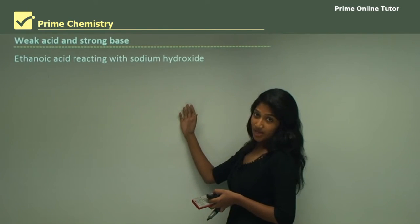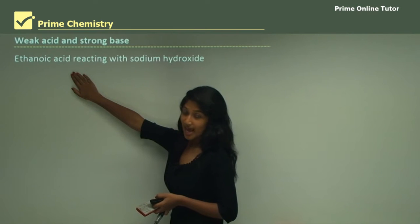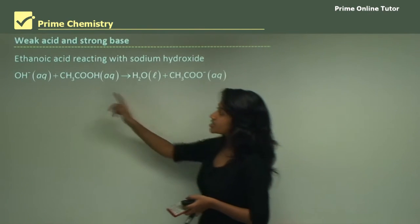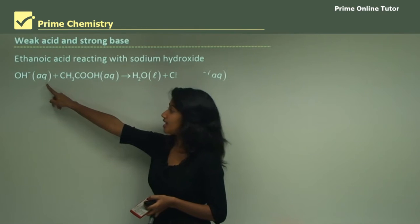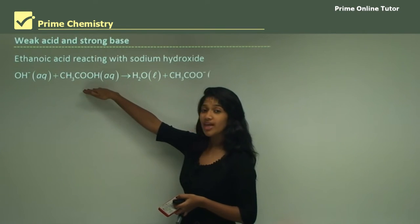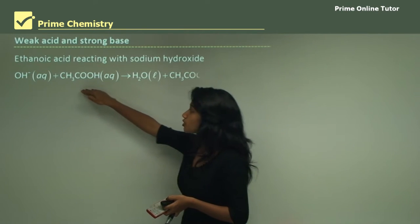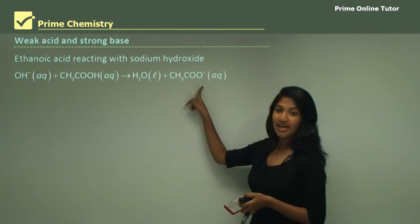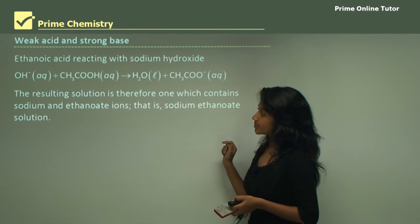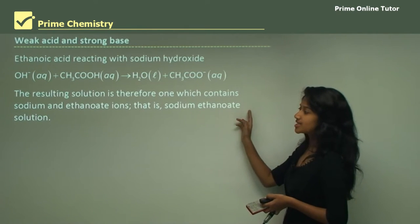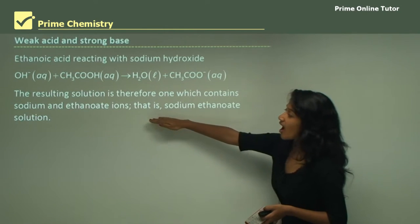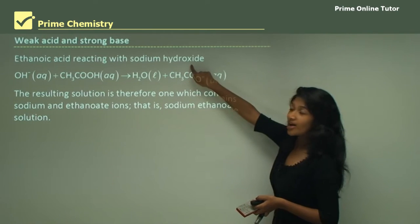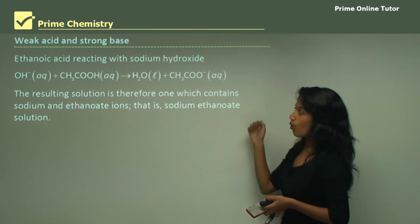Weak acid and strong base: ethanoic acid (a weak acid) reacting with sodium hydroxide (a strong base). Because ethanoic acid is a weak acid it doesn't completely ionize, so the whole acid molecule reacts. The hydroxide ions from sodium hydroxide react with the ethanoic acid molecule to form an acetate ion along with water. The resulting solution contains sodium and ethanoate ions — that is, sodium ethanoate (or sodium acetate) solution.